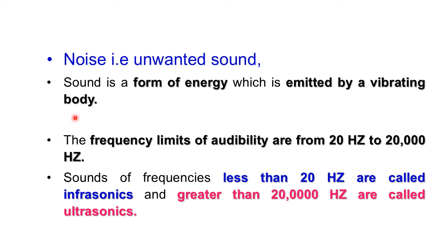Noise, that is unwanted sound, is a form of energy which is emitted by a vibrating body — meaning any kind of source which creates sounds whose frequency is above 20 Hz or above 50 Hz. The frequency limits of audibility range from 20 Hz to 20,000 Hz. Sounds with frequencies less than 20 Hz are called infrasonic, and greater than 20,000 Hz are called ultrasonic.